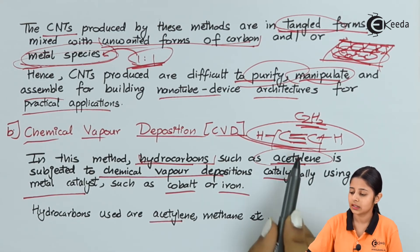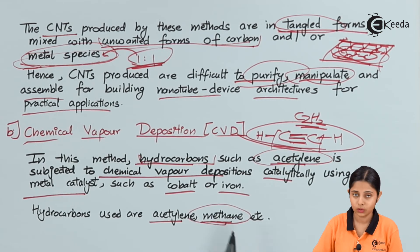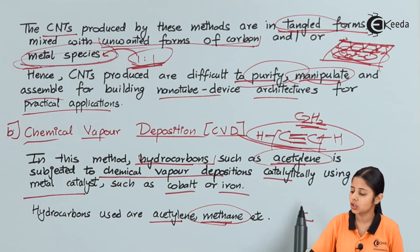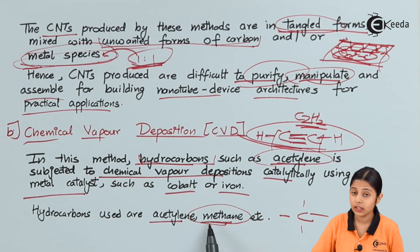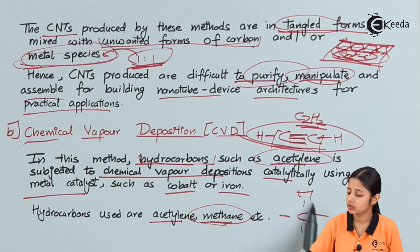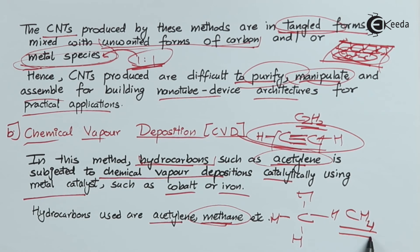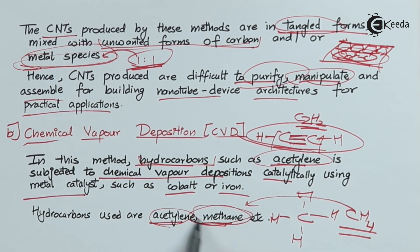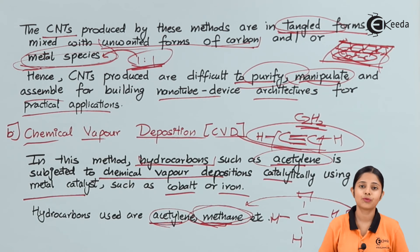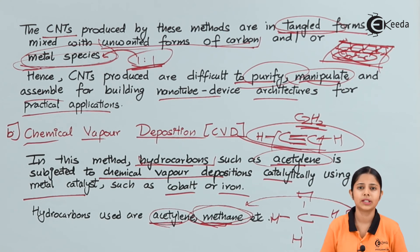Hydrocarbons used in CVD include acetylene (C≡C) and methane. Methane has carbon with a valency of four, all four bonds connected to hydrogen, giving the molecular formula CH4. So acetylene and methane can both be used for chemical vapor deposition for making carbon nanotubes. In today's session we studied the five methods of preparation of CNTs, of which two were most important: the laser method and the CVD method. We studied both in detail including their drawbacks.